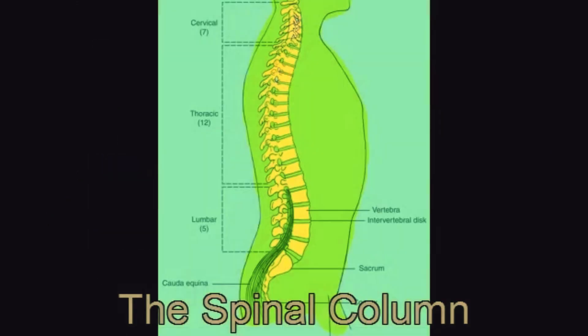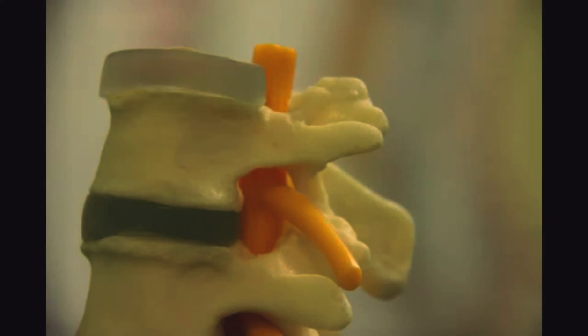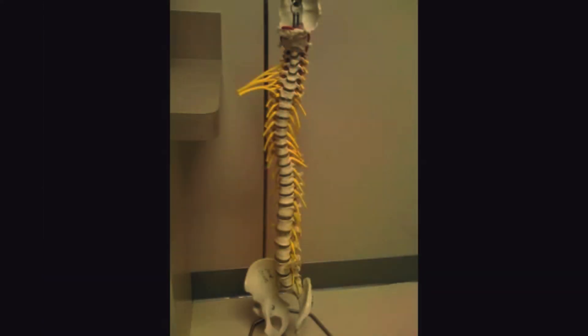The spinal column is composed of about 30 bones, which are called vertebra. Arising from the vertebra are 31 sets of spinal nerves. The spinal nerves are represented in this model of the spine in yellow.